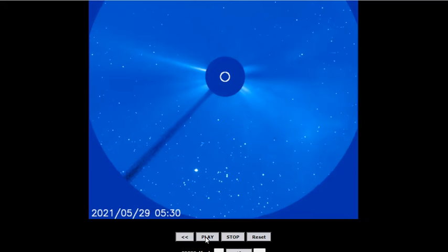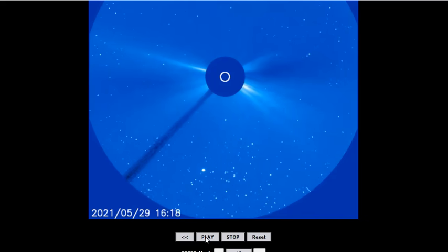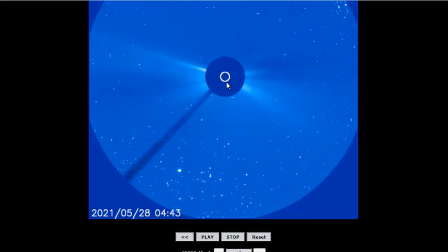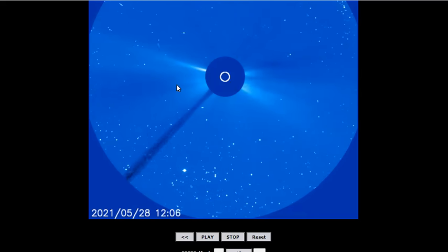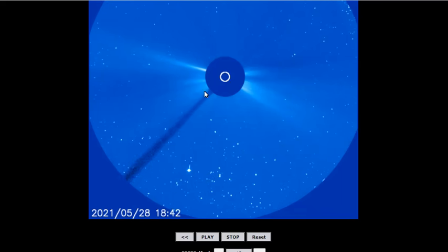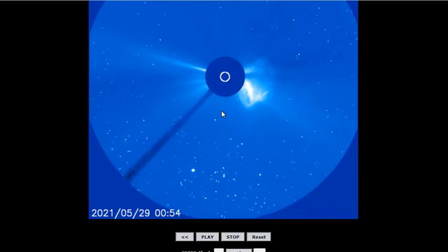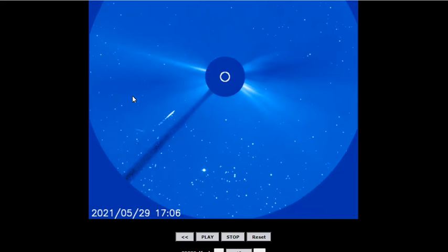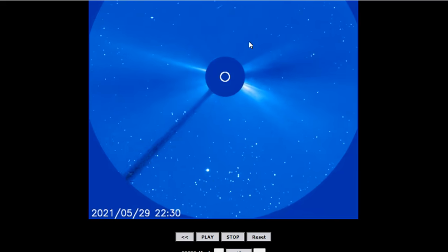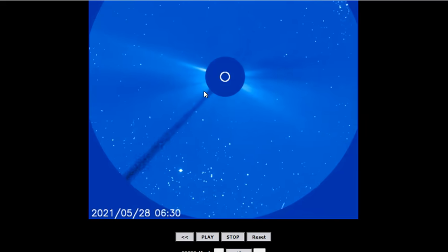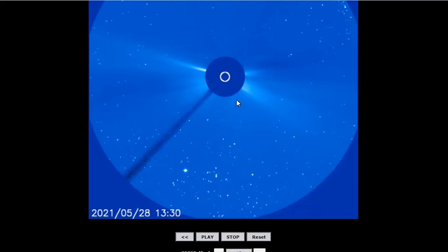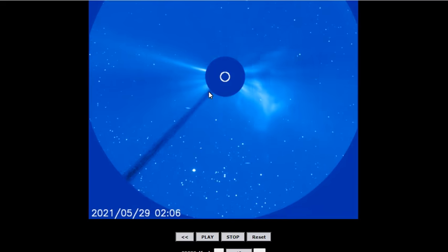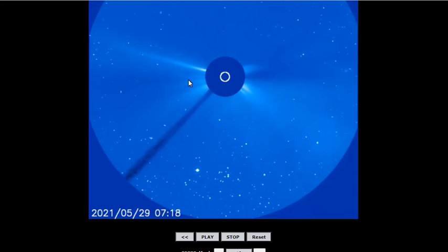And here's LASCO C3 showing that amazing amount of material. Now what you want to look at is the material is coming out of this side. But look at the opposite side of the Sun where we can also see a simultaneous blast. Did you see the shockwave moving out? That's the little halo aspect of it showing that plasma is moving in all directions. So watch for the shockwave to happen while the CME occurs.